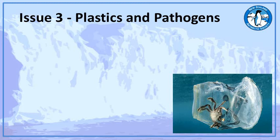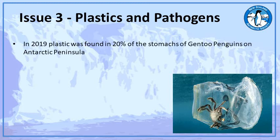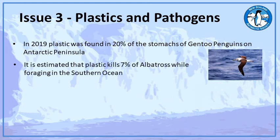Moving on to plastics and pathogens: in 2019, plastic was found in 20% of the stomachs of Gentoo penguins on the Antarctic Peninsula. Plastic is also now being found in krill and salps — small jellyfish-like creatures — which are both the basis of the marine food chain in the world's oceans. These are now all being found in Antarctica and move through the marine food chains as these animals do. It's estimated that about 7% of albatross are killed while foraging, getting caught up in plastic, with a lot of plastic also found in the stomachs of dead albatross.